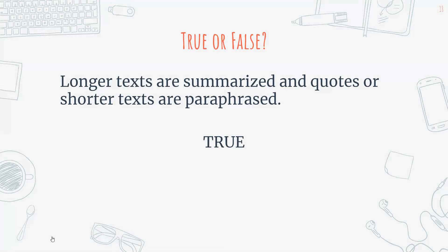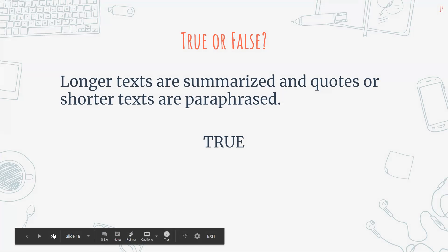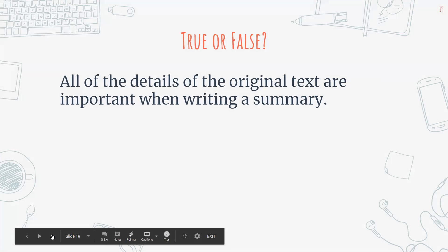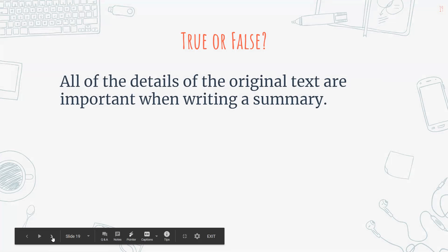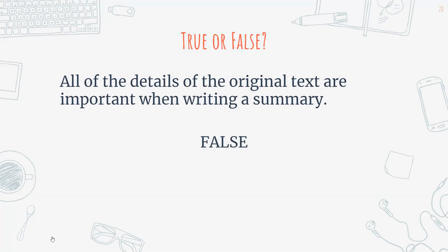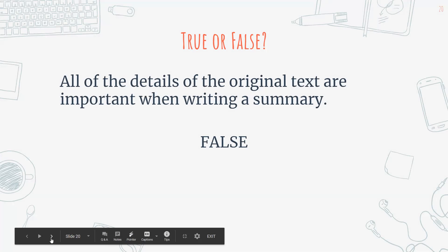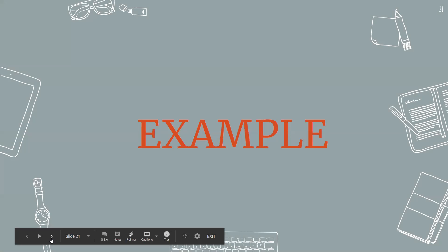Longer texts are summarized or made more concise, while quotes or shorter texts can be paraphrased. True or false: all of the details of the original text are important when writing a summary? Well, that's not true. You don't need all of the details of the original text when writing a summary — you just need your main points.